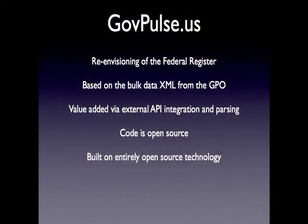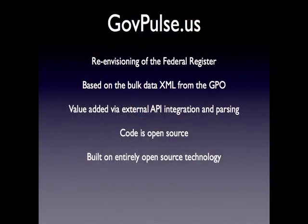We wanted to make all this rich, important information in the Federal Register — the daily rulemaking and the administrative workings of the executive branch — more accessible to the public. We started with the bulk data, originally just the MODS files which are the metadata around these documents, and then spidered the GPO sites to get the full ASCII text of these articles. We were able to do more when the bulk XML feeds were made available. We also added value by sending things out to external APIs to mark up the data in richer ways. Our code is completely open source, built on open source technologies, and everything is hosted in the cloud.